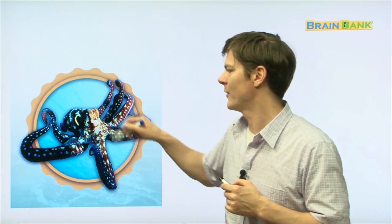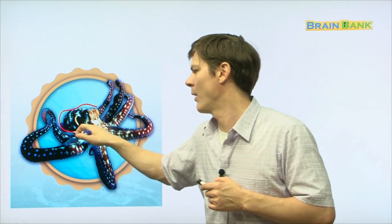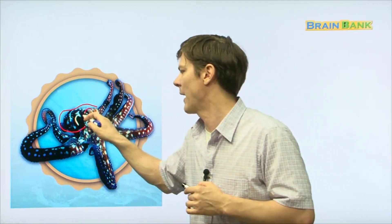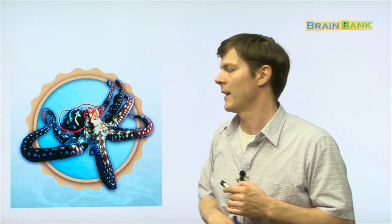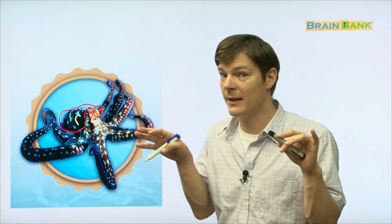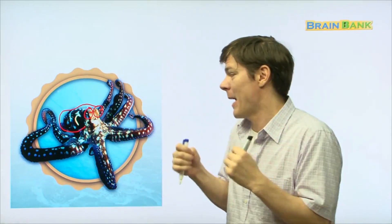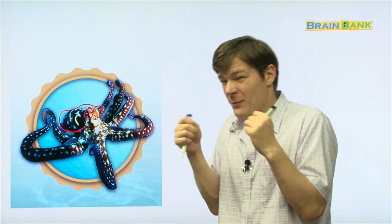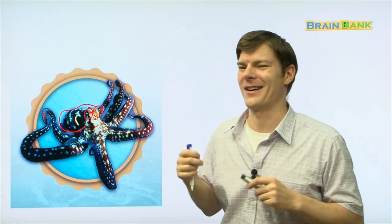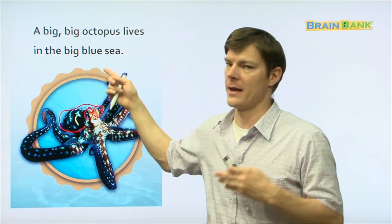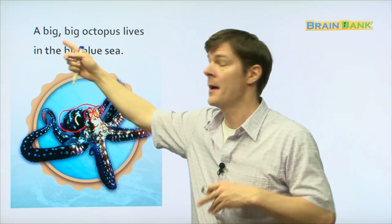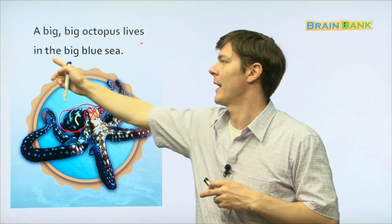And then we have this. Do you know what this is? This is an octopus. Look at how big it is. Do you see its big head right here? And it's got two big eyes right here. He's looking at us and if we get too close his legs, how many legs does he have? Eight. Eight legs. His legs might grab us and we can't get free. A big big octopus lives in the big blue sea. Everyone repeat with me. A big big octopus lives in the big blue sea.